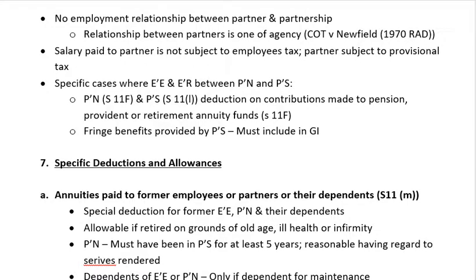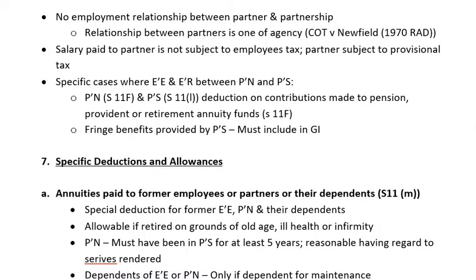There are some specific cases where an employee-employer relationship does exist between a partner and a partnership. In terms of Section 11(f) and 11(l), for a deduction on contributions made to a pension, provident, or retirement fund, there will be an employee-employer relationship. Any contributions that a partnership makes on behalf of a partner to a pension, provident, or annuity fund in terms of Section 11(f) may be included as an allowable deduction. Also, any fringe benefits provided by the partnership — such as a travel allowance for a partner — must be included in the gross income of the partner.